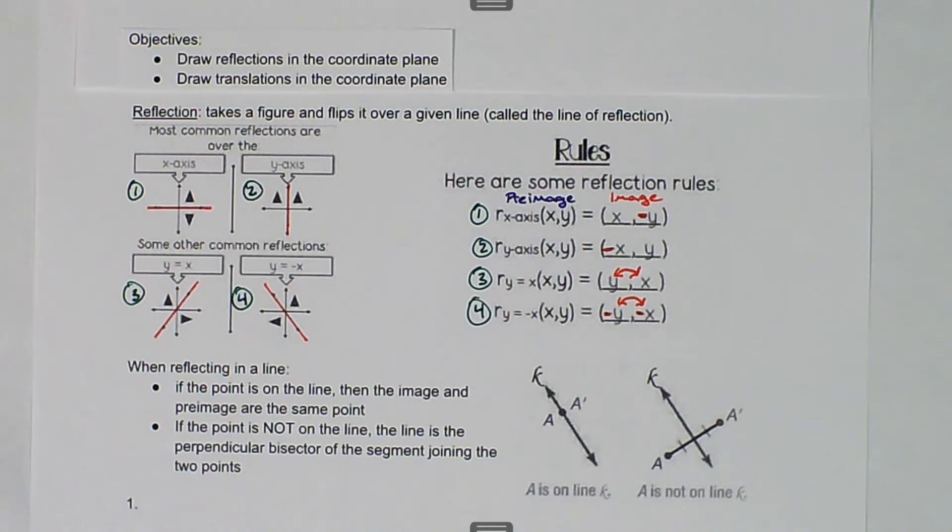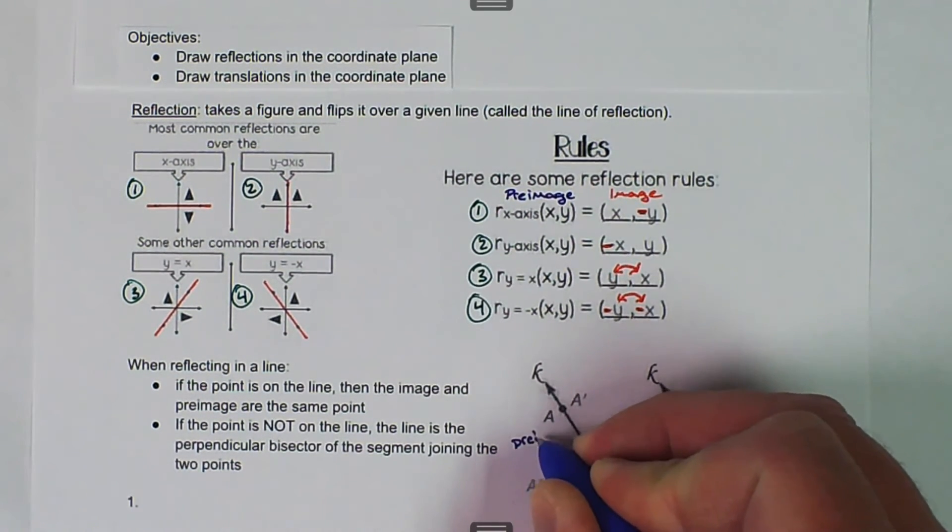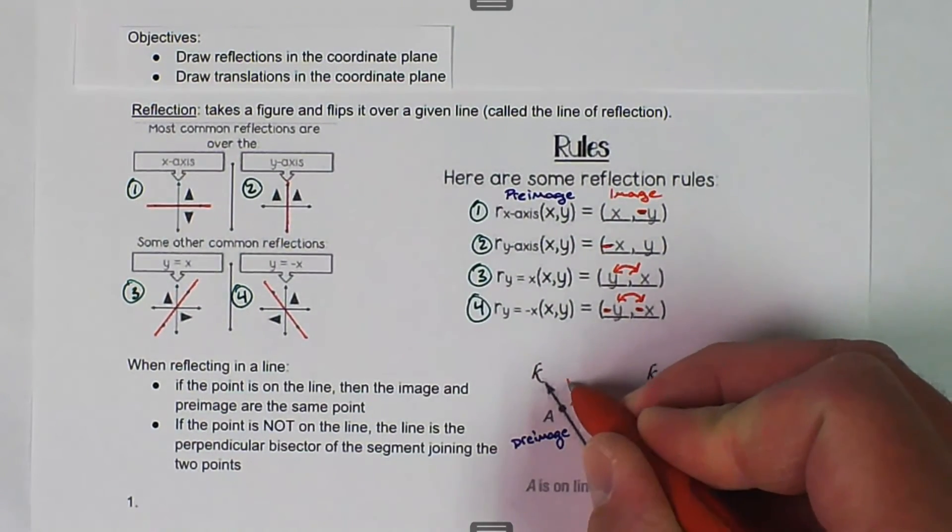When reflecting in a line, if the point is on the line, then the image and the pre-image are the same point. So A is on the line right here. A is the pre-image, A prime is the image. So those don't change, they don't move, they have the same coordinates.